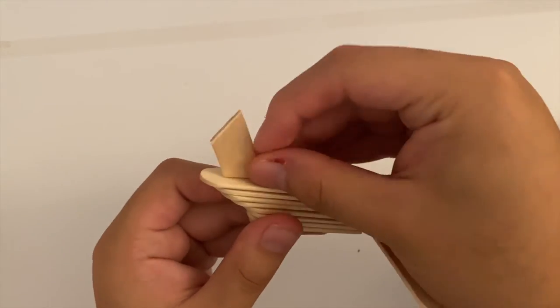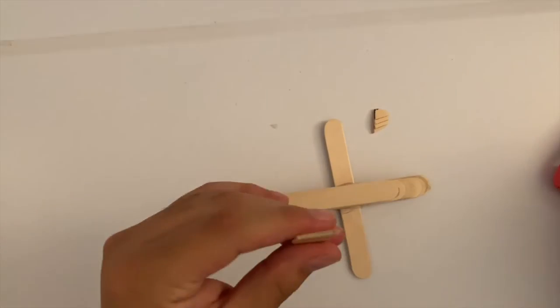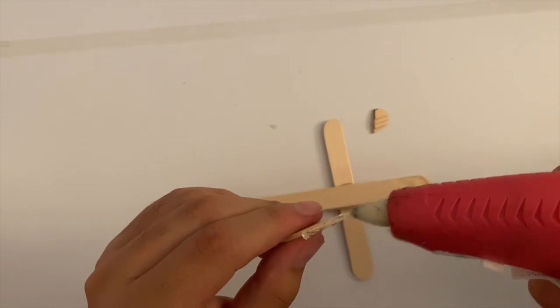Now with this piece you have just cut, start to apply it to the back of the wing with super glue. This will make up the back wing of the plane.